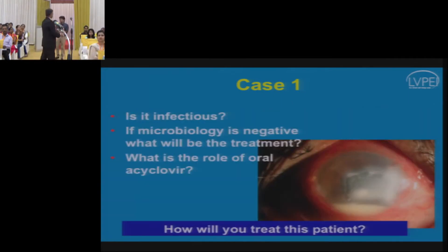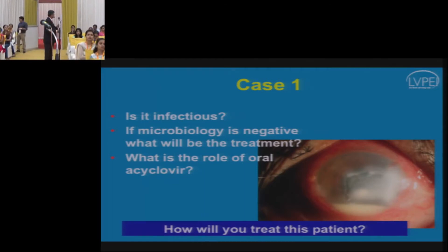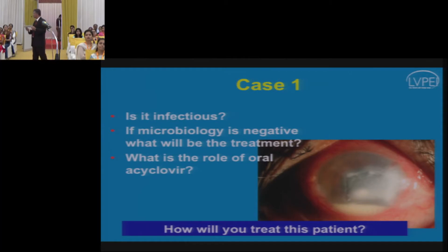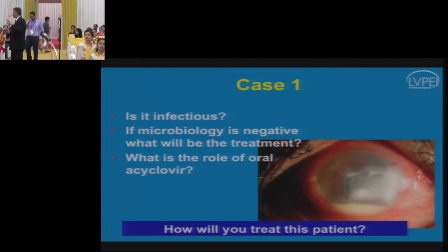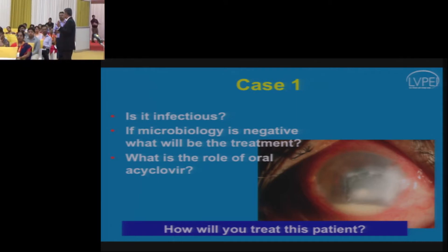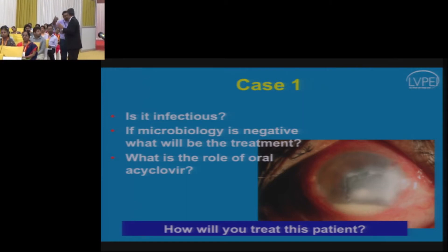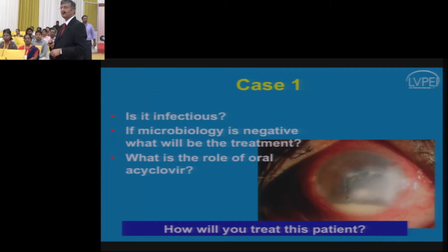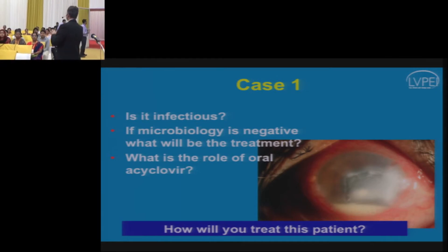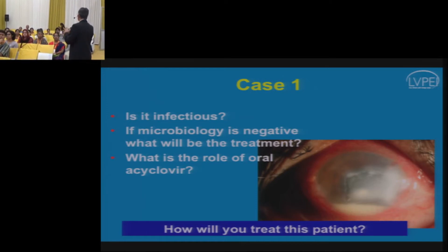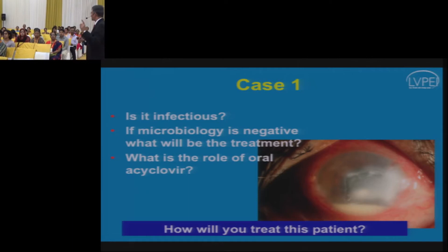Key management principles: the presence of hypopion raises suspicion of secondary infection, so corneal scraping should be performed to exclude infection. However, if microbiology is negative, the hypopion or infiltrate can be explained by sterile inflammation — epithelial breakdown leads to corneal inflammation, which in turn leads to uveitis and hypopion. Hypopion does not always indicate infection; it can be sterile.